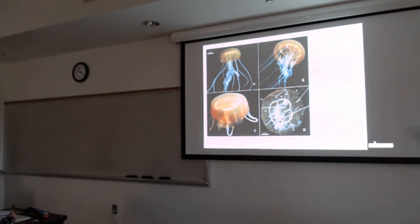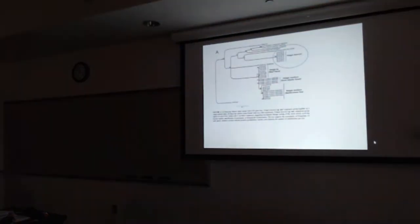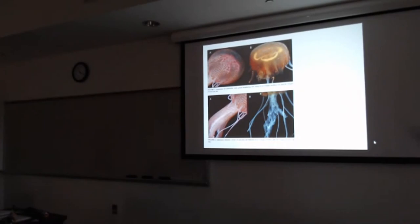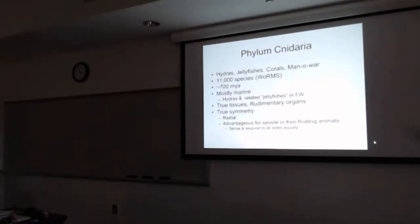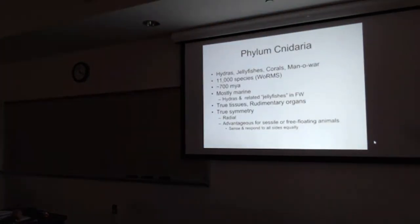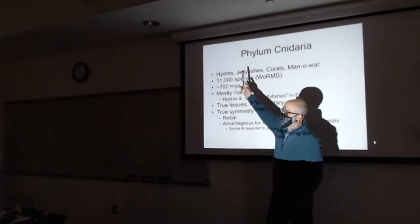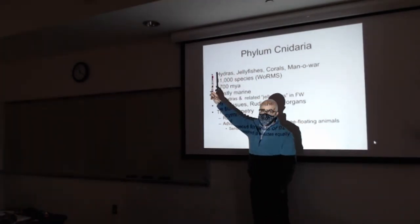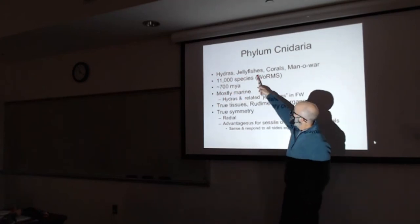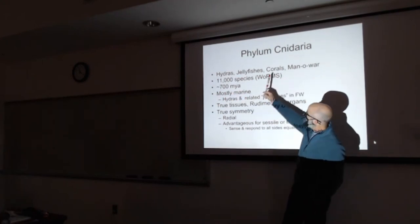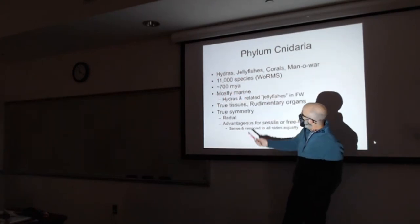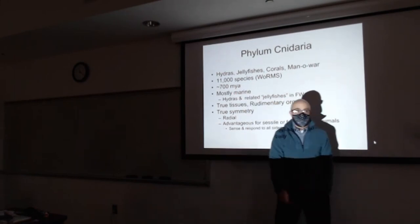The phylum Cnidaria are the radially symmetrical animals. This includes things like hydras, freshwater organisms that certainly occur right here on campus, jellyfish, coral, things like man-o-war, anemones, about 11,000 species.